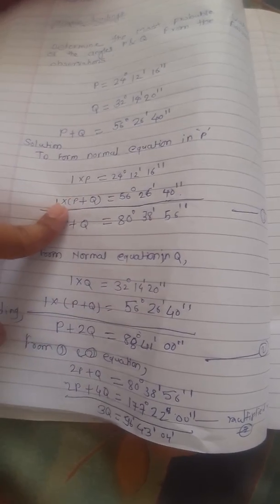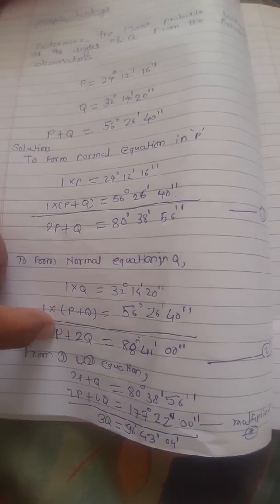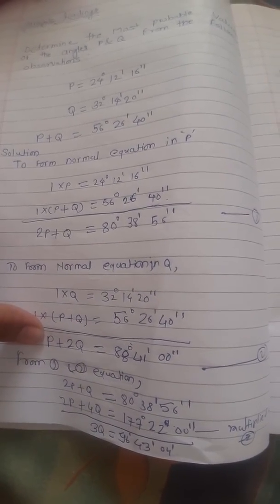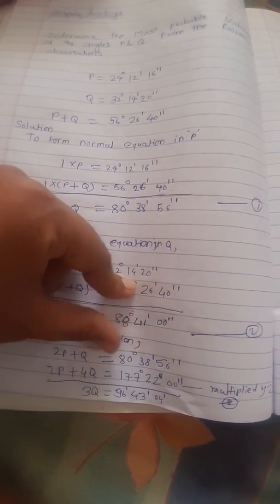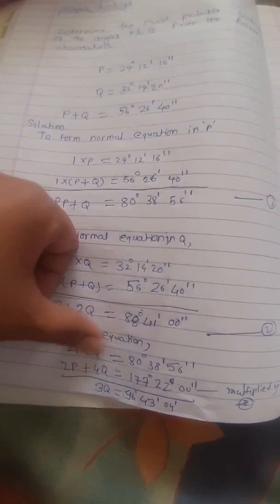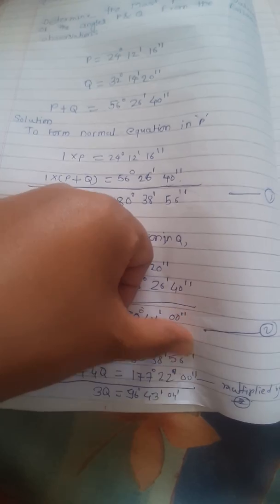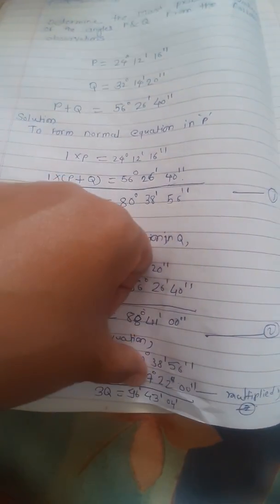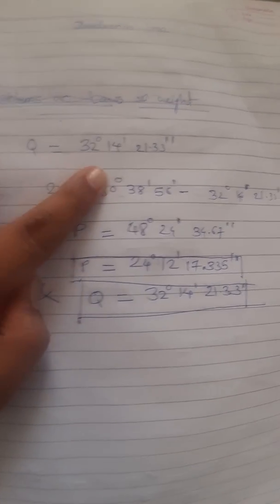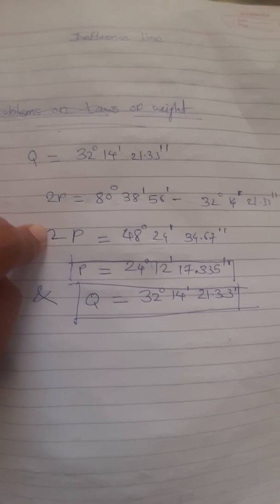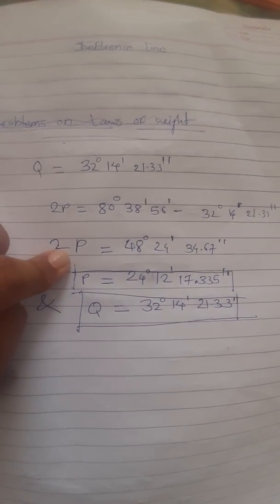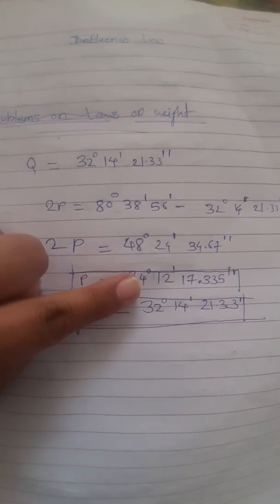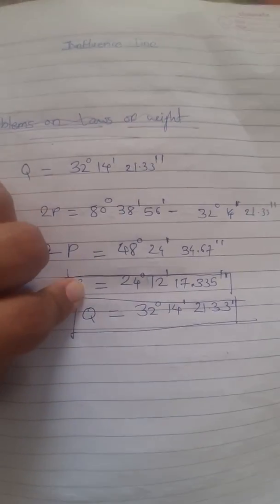From equations 1 and 2, multiply equation 2 by 2 to cancel the 2P terms. So: 2P plus Q equals 80 degrees 38 minutes 56 seconds, and 2P plus 4Q equals 177 degrees 42 minutes 0 seconds. Subtracting gives 3Q equals 96 degrees 43 minutes 4 seconds, so Q equals 32 degrees 14 minutes 21.33 seconds. Now put this Q value back into either equation 1 or equation 2 to get P.